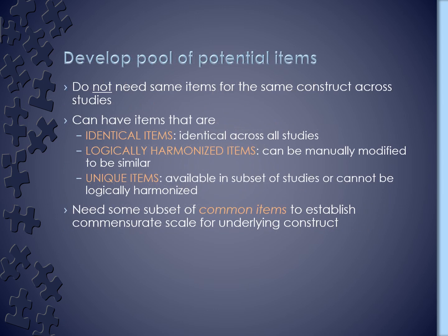In this talk, I'm really going to start zeroing in on that fourth step, which is how you develop that pool of potential items from across the studies that you're trying to pull together. One of the things that I will emphasize again and again is that you do not need identical items or measures to be able to pull data through an IDA approach. You do need to have some overlap, and once you have a pool of items, you're going to identify three types of items in that data set.